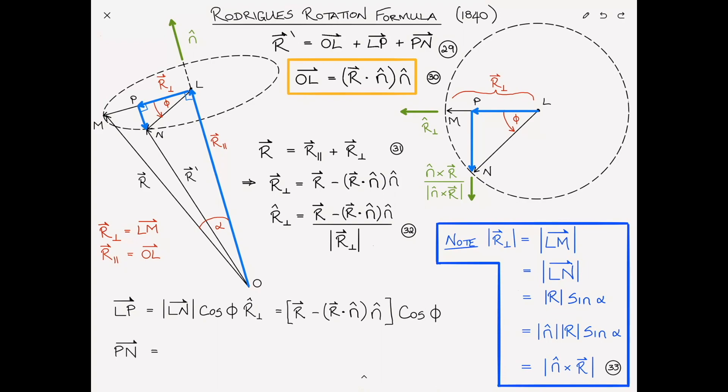And similarly, we can find the vector PN by taking LN, the magnitude of LN, times sin φ. And what is the direction of PN? That's just this unit vector, which is n̂ × r divided by the magnitude of n̂ × r. And again, this LN and this n̂ × r will cancel one another out because we explained it here. These two are equal: LN and n̂ × r are equal. So this gives us n̂ × r times sin φ. Number 34 and 35.